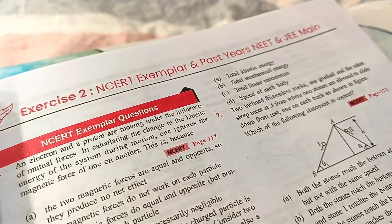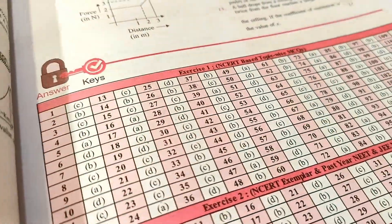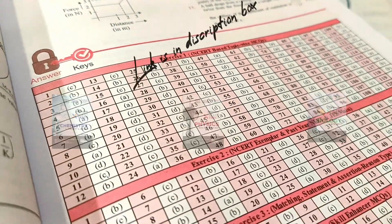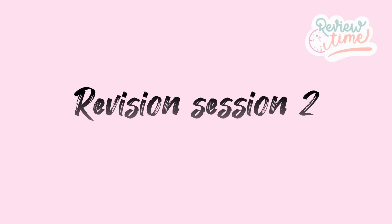The questions are divided into five exercises. The first one contains the NCERT based questions. The second one is the NCERT Exemplar and past year NEET questions. The third exercise is the matching statement and assertion and reason type questions. The fourth exercise is the skill enhancer questions, and the fifth exercise contains the numeric value questions. And last but not least, they have also provided the answer key of each question. This book is available for all the three subjects. If you want to buy it, its Amazon and Flipkart link is given in the description box.